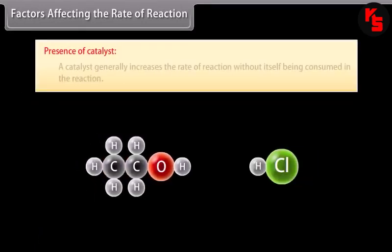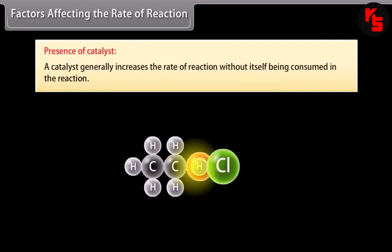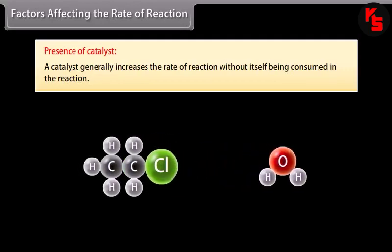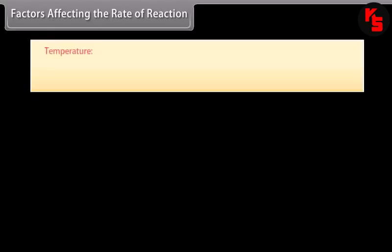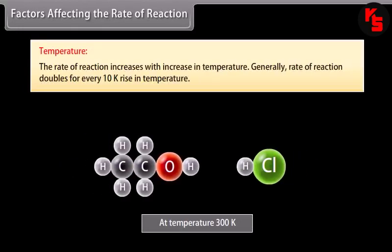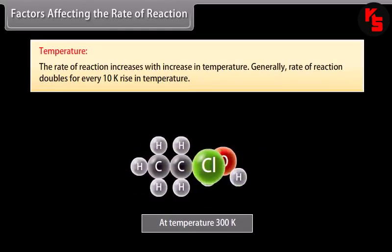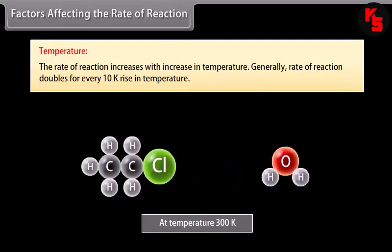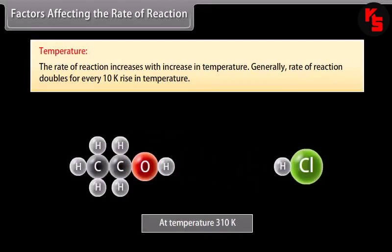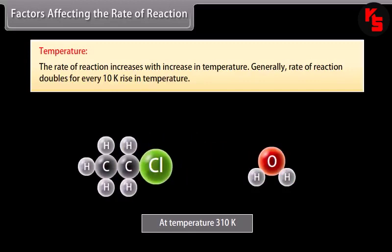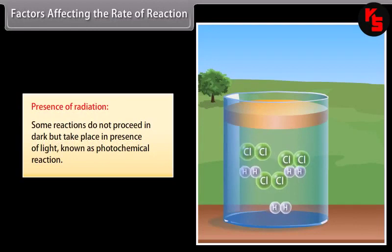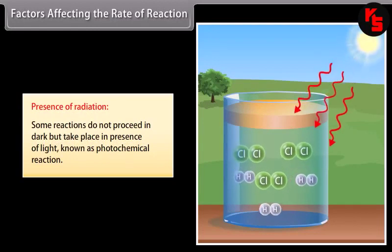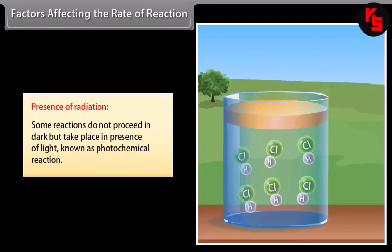A catalyst generally increases the rate of a reaction without itself being consumed in the reaction. The rate of a reaction increases with an increase in temperature; generally, the rate doubles for every 10 Kelvin rise in temperature. Some reactions do not proceed in the dark but take place in the presence of light, known as photochemical reactions.